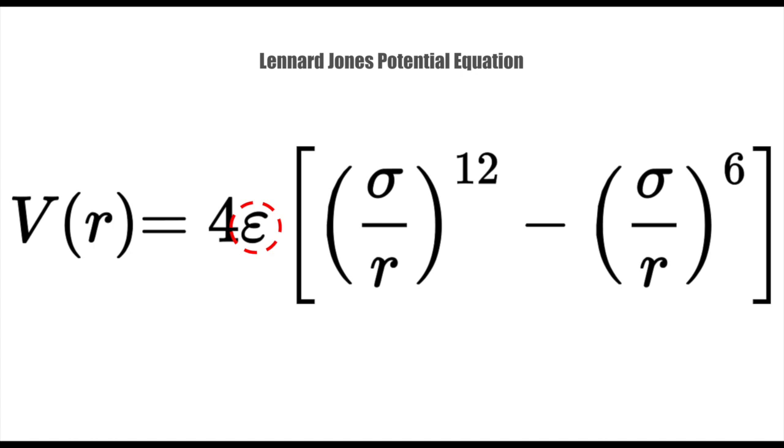In this formula, the term raised to the 12th power represents a repulsive term, while the term raised to the 6th power represents the attractive term. Because the repulsive force between atoms is much stronger than the attractive force between atoms, the repulsive force dominates the equation. The balance between these two terms determines the overall shape of the potential curve.